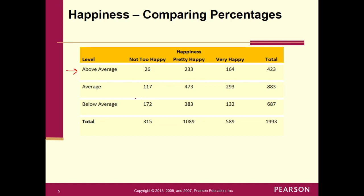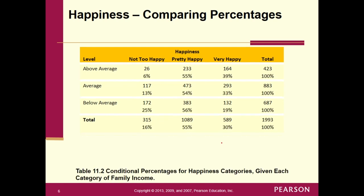So we would go to average and take 117 divided by 883, and so on and so forth. And there are all the percentages. Remember, as you work your way across each row, they should always add up to 100%.